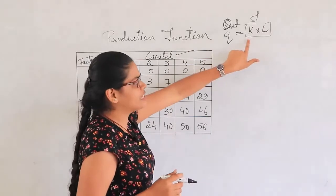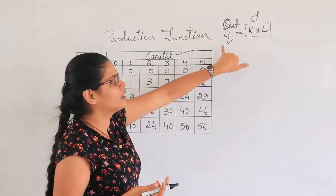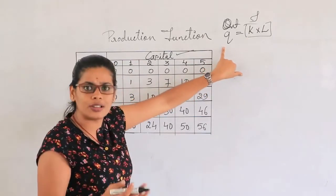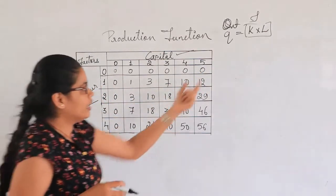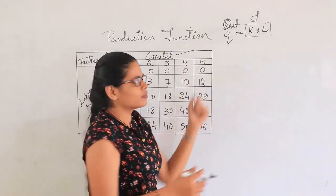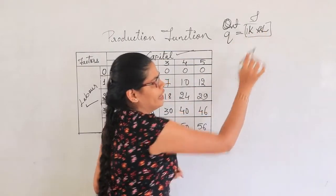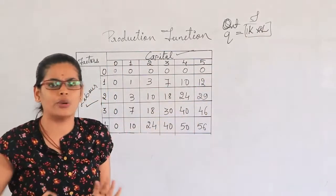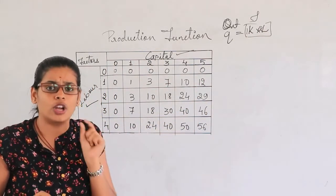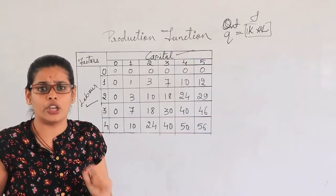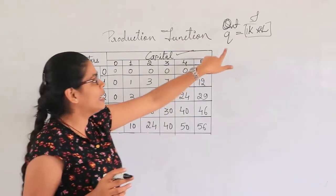The production function tells us about the relationship between capital and labor. If you increase any one of these — either the capital or the labor — then you will also get an increase in the output. Any number of K or any number of L always gives Q, but the quantity of Q we get from the combination of K and L will be changed.